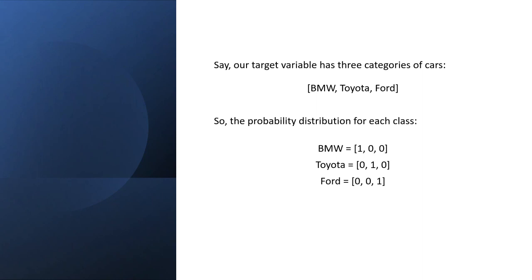The probability distribution for each class will look like this. BMW is the first one, so the first one is 1, and the Toyota and Ford is 0 and 0. And for Toyota, 0, 1, 0. Because first one is BMW, third one is Ford, they are 0, and middle one is Toyota, so middle one is 1.